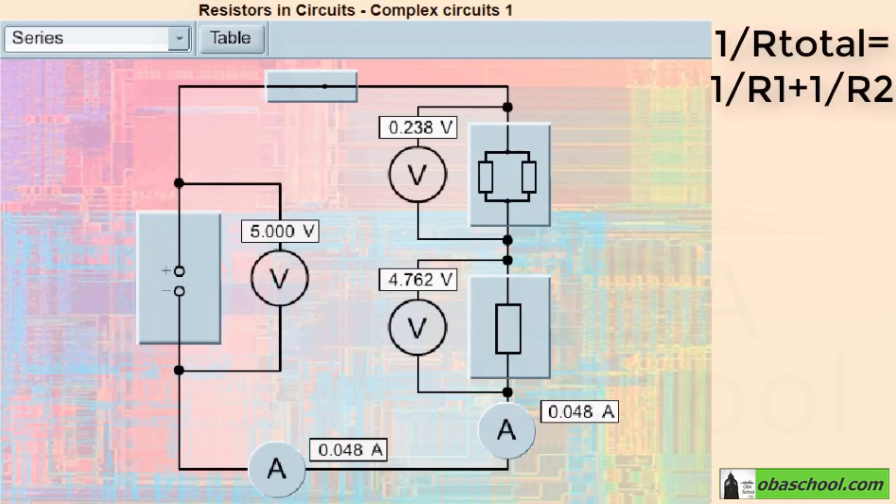Exactly! By using the equation for resistors in parallel, 1 over R total equals 1 over R1 plus 1 over R2, we get a value of 5 ohms.